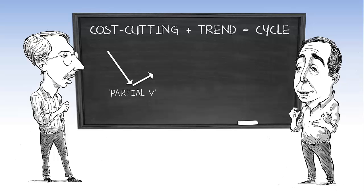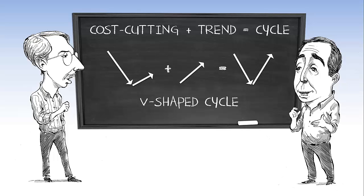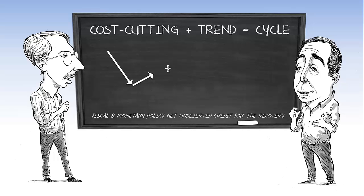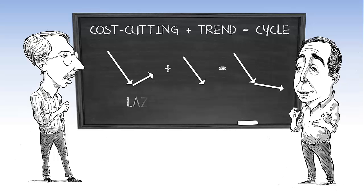The normal cost-cutting produces a kind of partial V. But if you take that partial V and add a secular upward trend, you get the V-shaped cycle — the happy cycle — with temporary layoffs followed by recalls. These are short-lived events that fiscal or monetary policy may take credit for, but really it's mostly the timing of the recalls. But if the cost-cutting, which kills off jobs, is combined with a negative sector trend, then you get the kind of lazy L we have now. That means a couple million manufacturing workers, many centered in the Midwest, whose jobs have disappeared and who face the very difficult decision of what their next job will be.